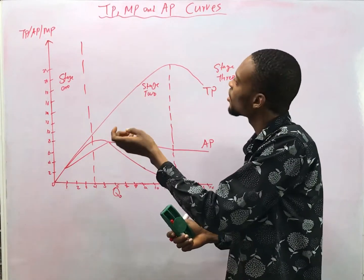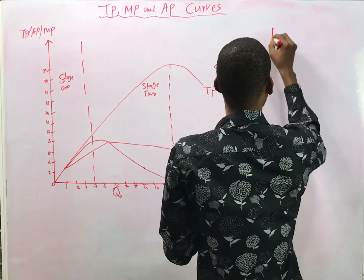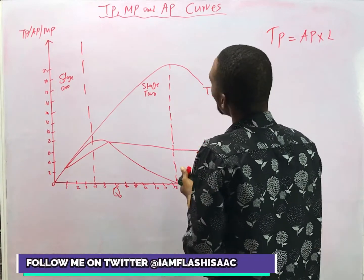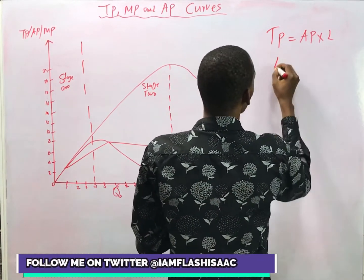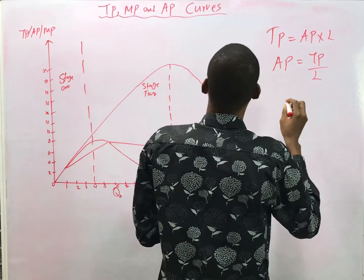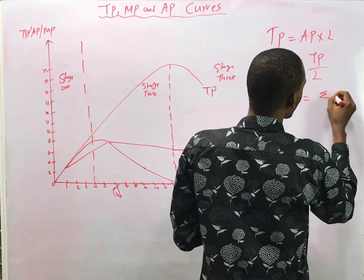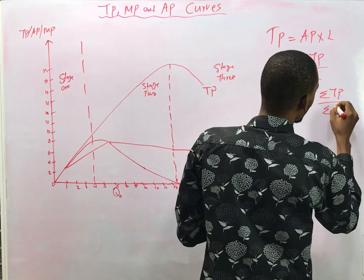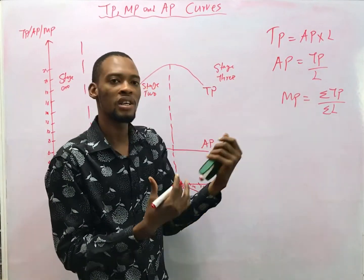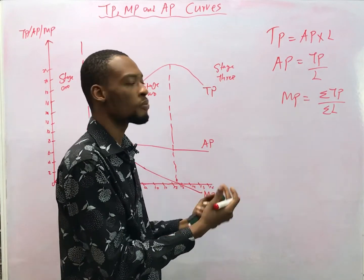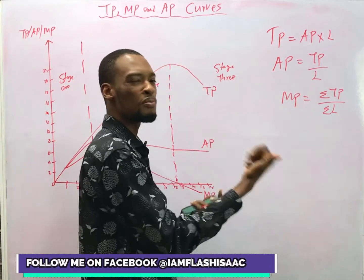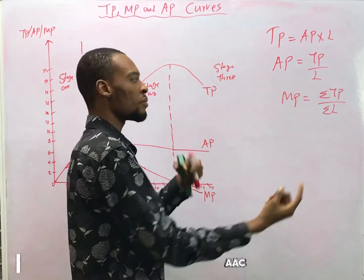Total product is the output after employing all resources. Total product (TP) equals average product times input. Average product equals total product over input. Marginal product equals change in total product over change in input. Average product is simply output per laborer, per worker, or per input.